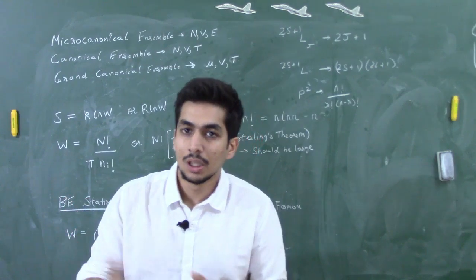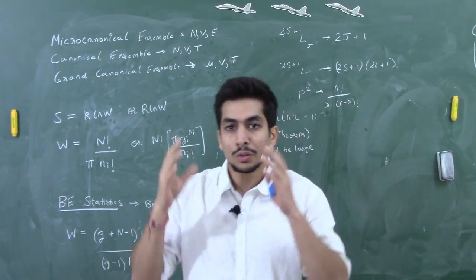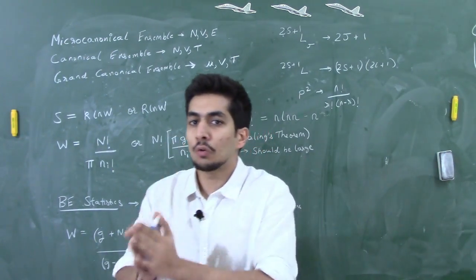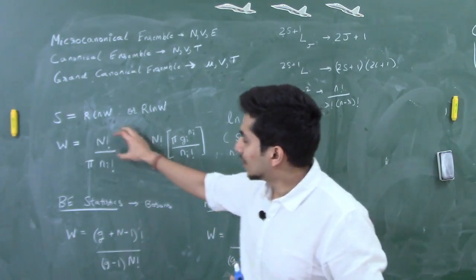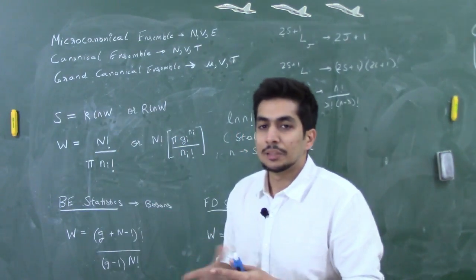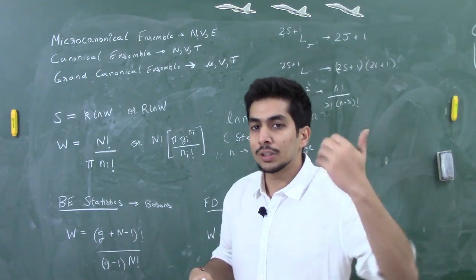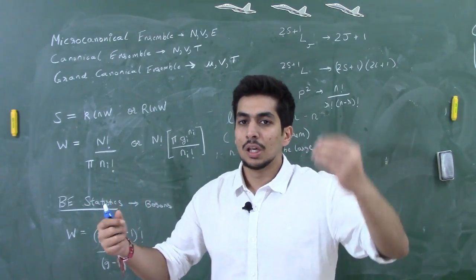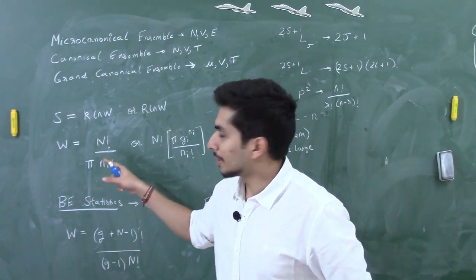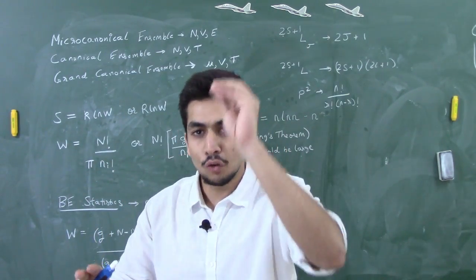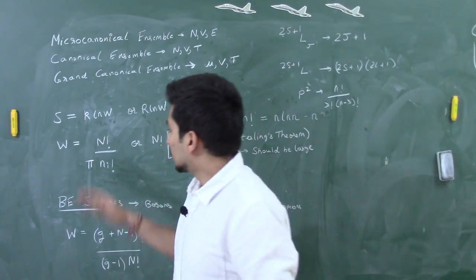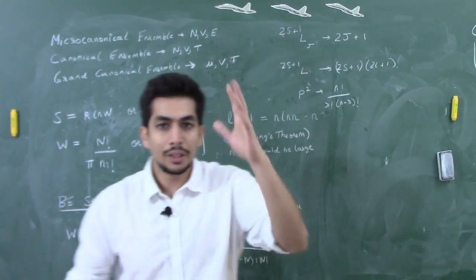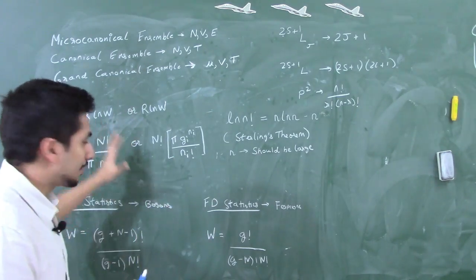For a classically distinguishable (Maxwell-Boltzmann) system, classical particles are always considered distinguishable. The formula for microstates is N! / (n₁! × n₂! × ...), where N is the total number of particles and nᵢ is the number of particles in each energy level. For example, if three energy levels have 2, 3, and 4 particles respectively, then total N = 9 and the microstates = 9! / (2! × 3! × 4!).